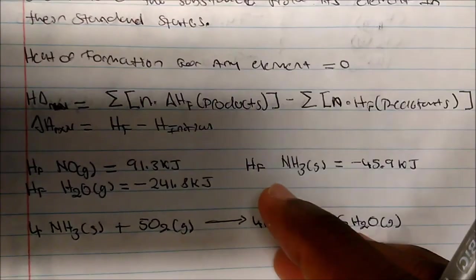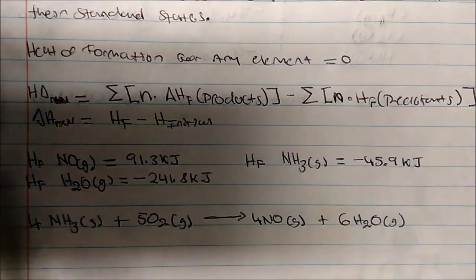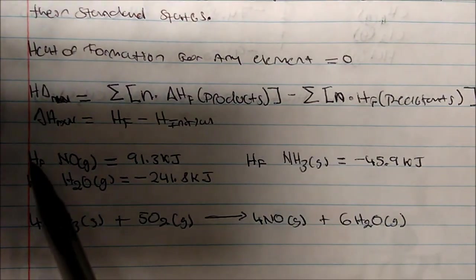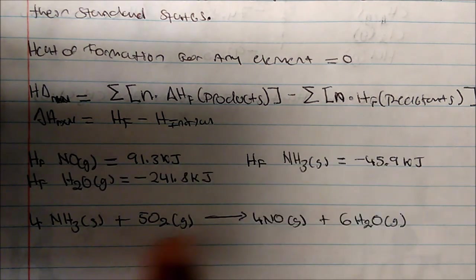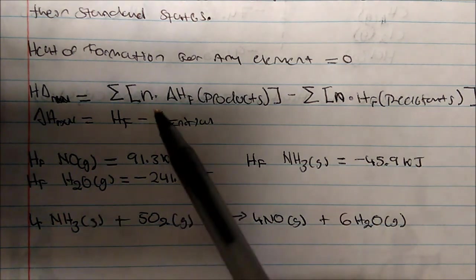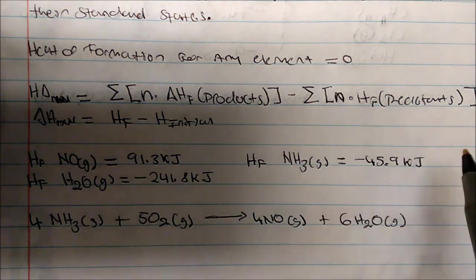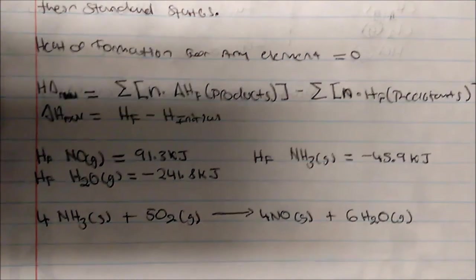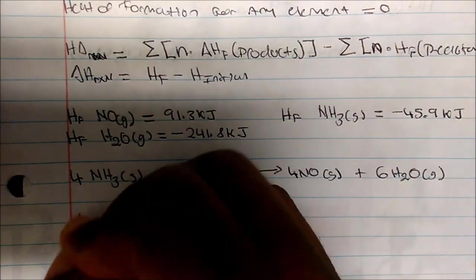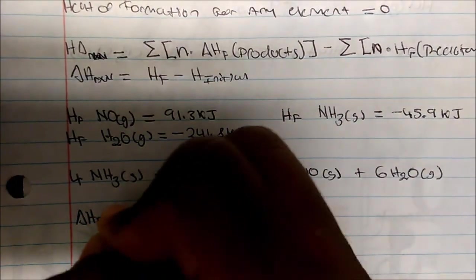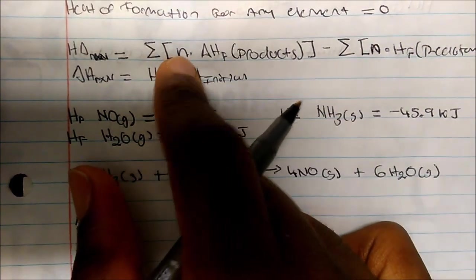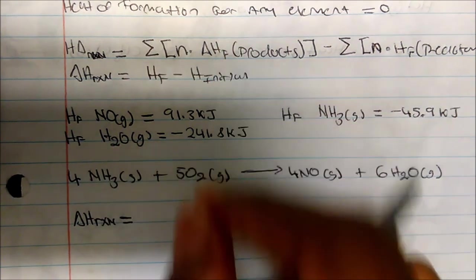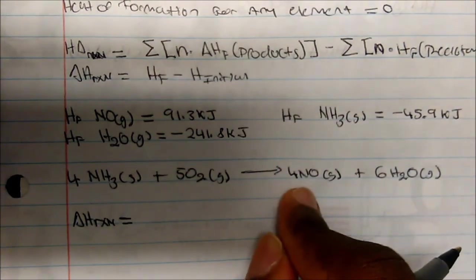The heats of formation are always given. Looking at this equation, how would we calculate delta H for this reaction? We know that delta H of the reaction is equal to the summation of the number of moles times the heats of formation of the products. So we're going to look at the products first.